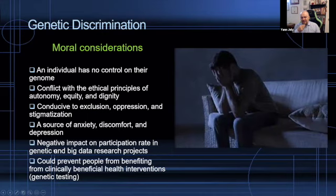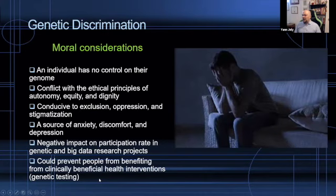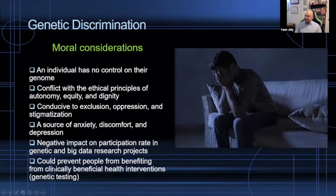That's not a surprise — that's the case with all types of discrimination we want to prohibit: they have this negative impact. Probably of greater concern to you in the audience is the negative impact on participation rates in genetic and big data research projects, because people worry they will be discriminated. It's one of the first reasons people would not participate in genetics and big data projects — they'll ask, is my information really protected, or is there a risk that I can be discriminated? Even when you tell them they will be protected, there's really a negative perception and worry about genetic discrimination.